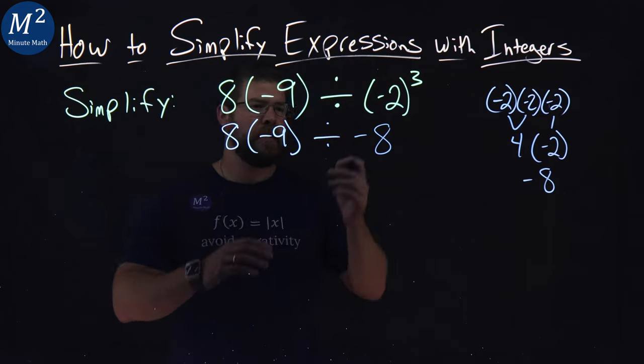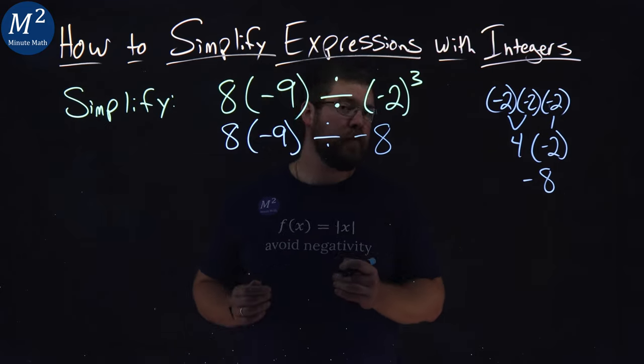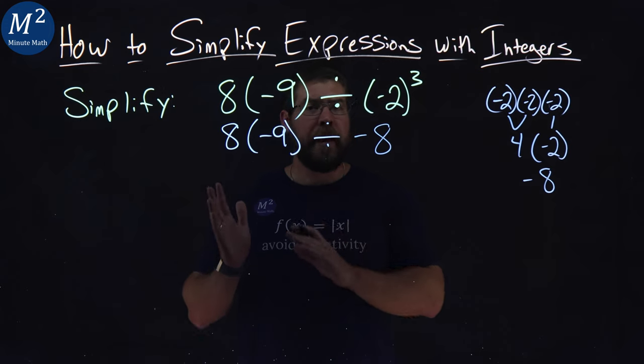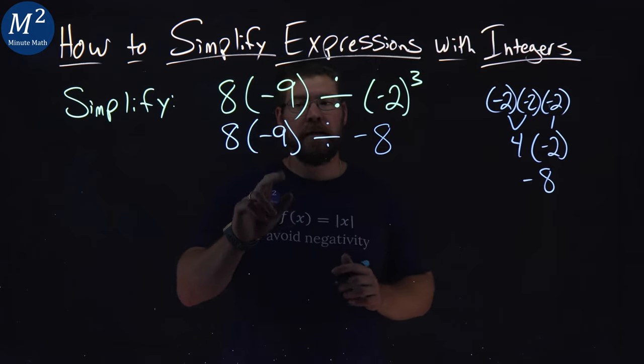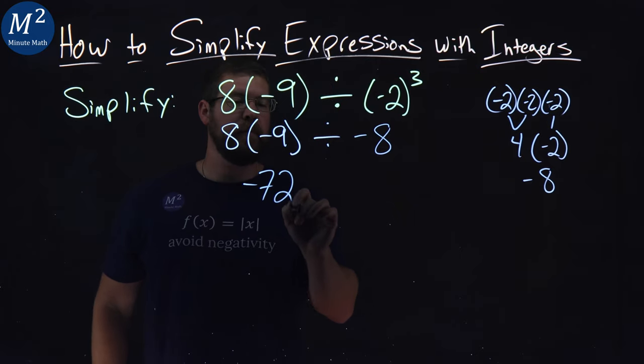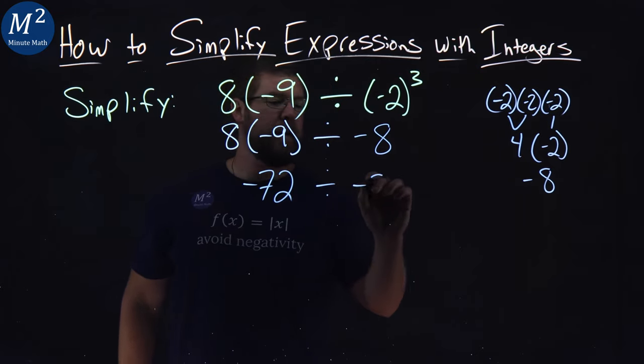Now we have multiplication and division here. They're on the same level in the order of operations, so we read left to right. Be careful with that. 8 times negative 9 is negative 72, and then we divide it by negative 8.